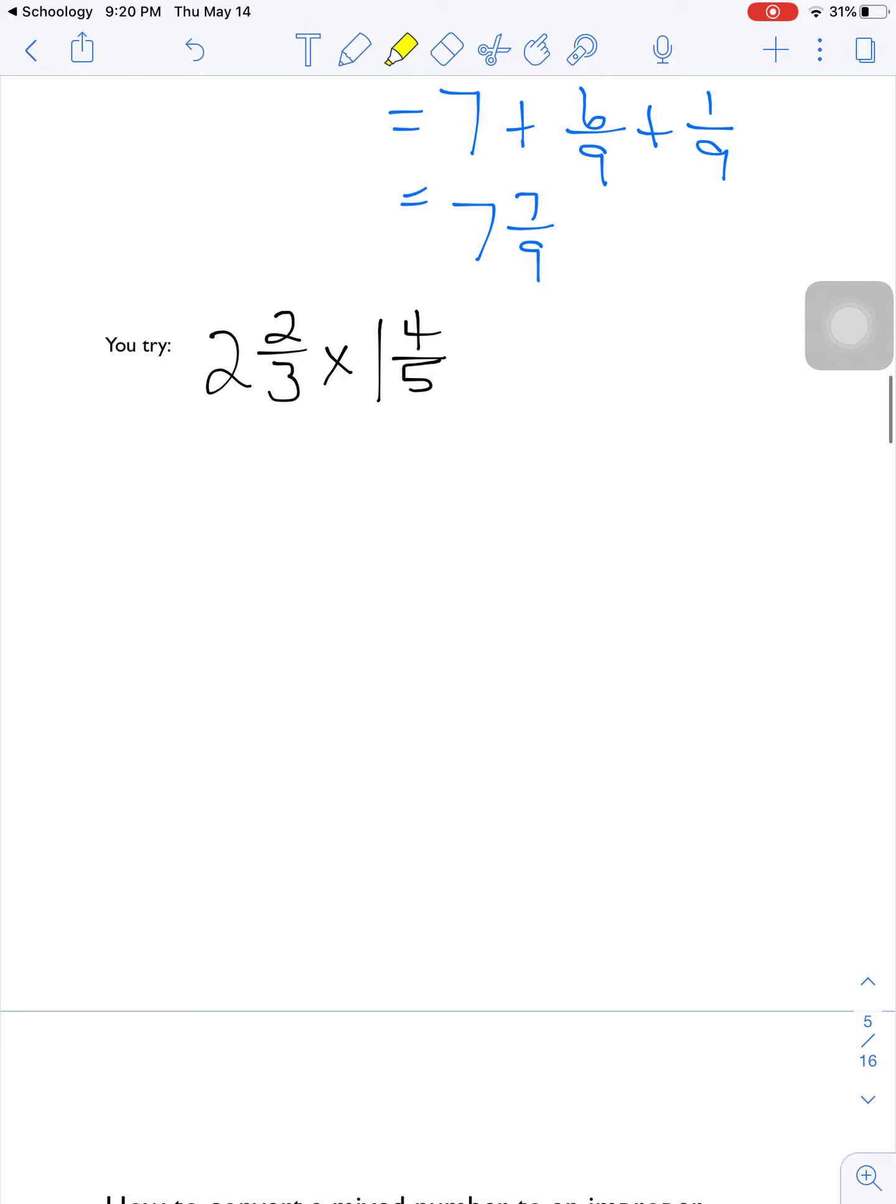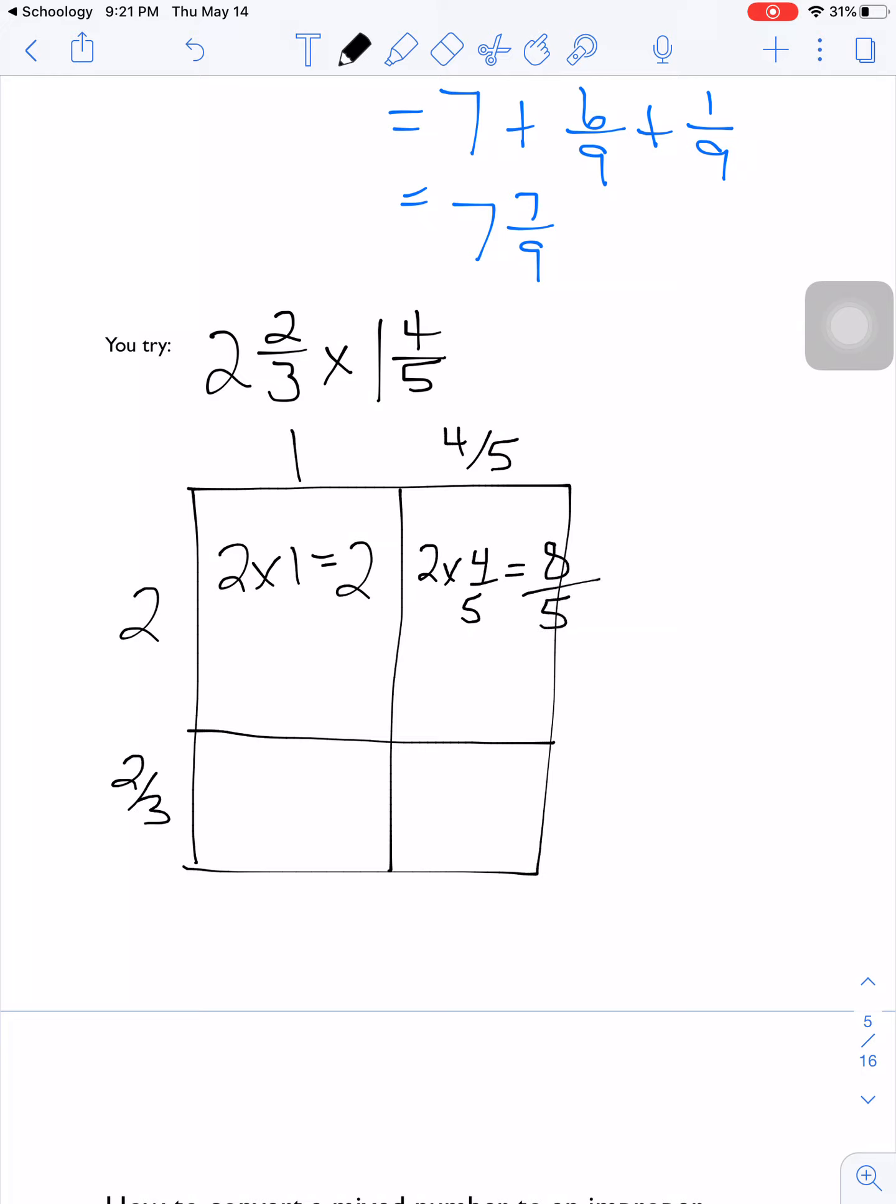Let's try one together here. So I'm going to go 2 and 2/3 down, 1 and 4/5 across. So here's my 2 and 2/3. This will be 1 and 4/5. And then I start filling in my numbers. So this will be 2 times 1, which is equal to 2. 2 times 4/5 is equal to 8/5, which is equivalent to 1 and 3/5.